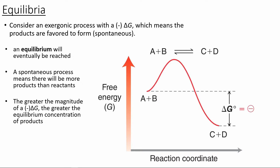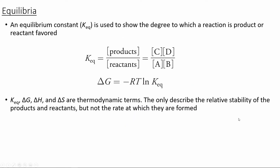The equilibrium constant is going to be the concentration of the products divided by the concentration of the reactants, and we can actually relate this equilibrium to the Gibbs free energy. Overall, we've looked at the equilibrium constant, the Gibbs free energy, the entropy, and the enthalpy — these are all thermodynamic terms. They can only describe the relative stability of both the products and the reactants, and they don't have any determining factor on the rate.